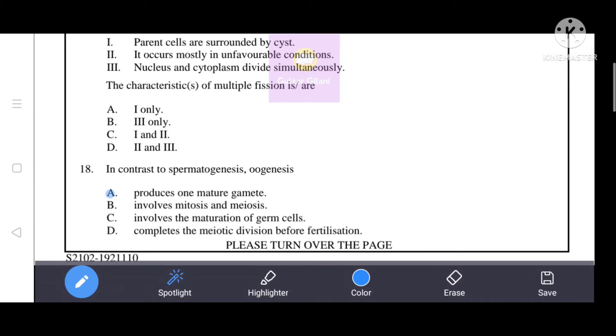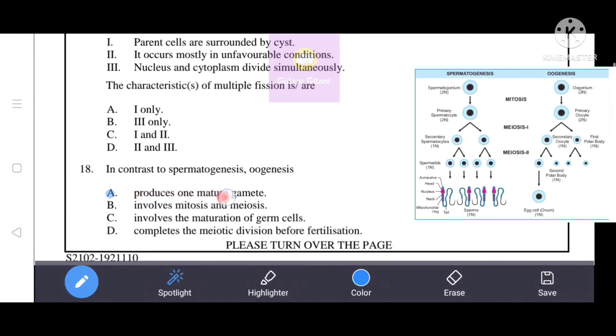Next question. In contrast to spermatogenesis, oogenesis produces one mature gamete, means option A is the correct answer. Oogenesis produces one mature gamete, whereas spermatogenesis produces four. So the correct answer is option A.